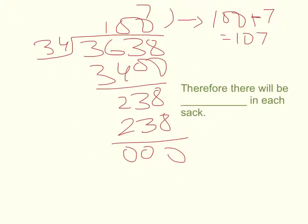Now that I have my answer as 107, I can go ahead and write it down in our statement. Therefore, there will be 107 rice grains in each sack. Bye-bye.